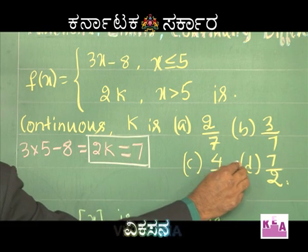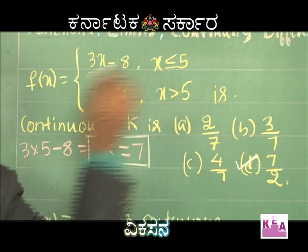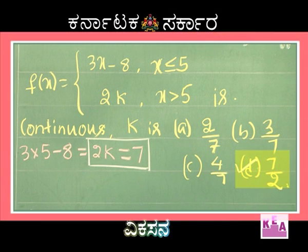Therefore k must equal 7/2, so option D is correct. See how simple the problem is — this is taken from your previous CET paper.